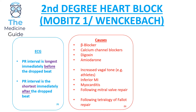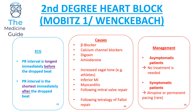The causes of second degree heart block Mobitz type 1 include certain medications such as beta blockers, calcium channel blockers, digoxin, and amiodarone. Other causes involve increased vagal tone as seen in athletes, an inferior MI, myocarditis, following mitral valve repair, and following tetralogy of Fallot repair. If the patient is symptomatic, we could offer atropine or, in rare cases, consider permanent pacing. Patients who are asymptomatic require no treatment.